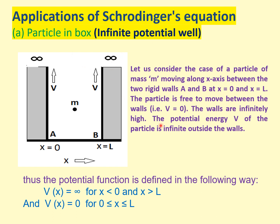Now we will use the Schrödinger equation to find the wave function and energy of the particle inside this box. Consider a particle of mass m moving along the x direction only, from x = 0 to L. The particle is free inside this box, meaning potential energy V or U = 0. The walls are infinitely high, so the potential barrier is infinity outside the box: V = ∞ for x < 0 and x > L. Inside the box, potential is 0, so the particle has only kinetic energy and behaves like a free particle.